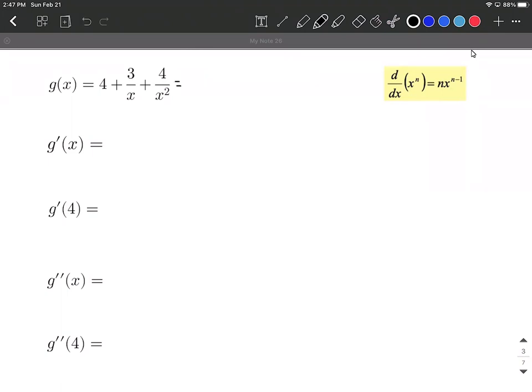So we can rewrite it, bring along the four, but then you'll notice that we have x to the first power down in the denominator. If we want to move that up to the numerator, we can rewrite it using a negative exponent. The same thing can be done with our last term there. We have four over x squared. To bring that x squared up to the numerator, we can make it a negative exponent. And that accomplishes what we want.